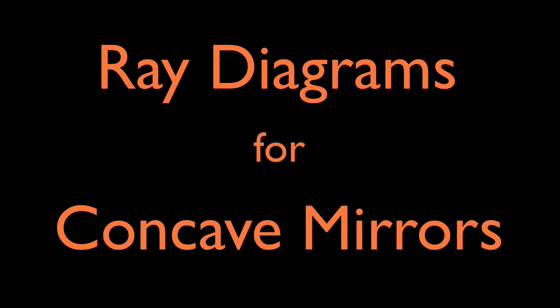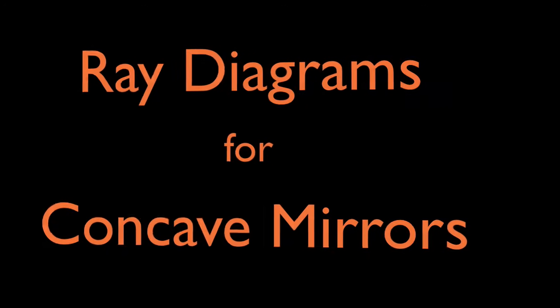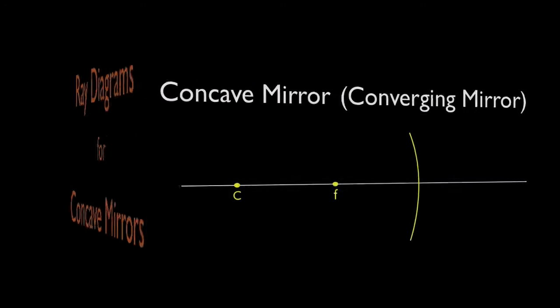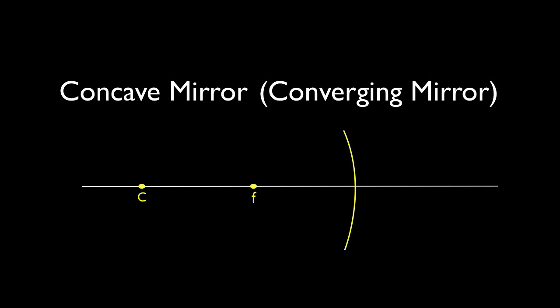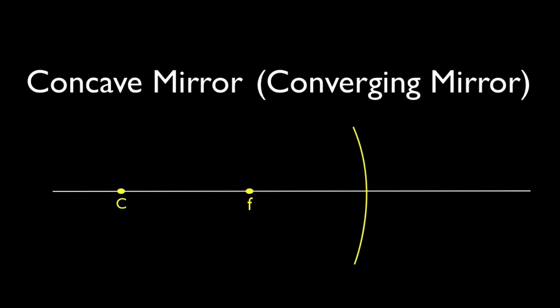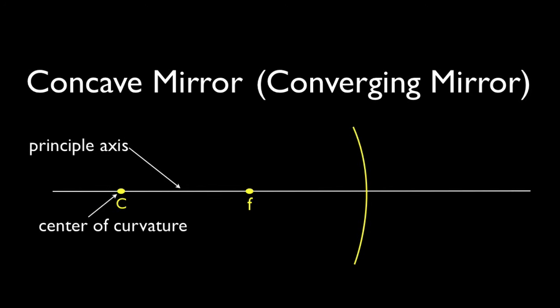In today's video we're going to go through drawing ray diagrams for concave mirrors and we want to be able to use those ray diagrams to locate the image. Here's the general diagram we're going to use. We want to make sure we know the important parts: this horizontal white line that runs to the center of the mirror, we call that the principal axis. We have point C, the center of curvature, and point F, the focal point, which is at a distance called the focal length from the mirror.